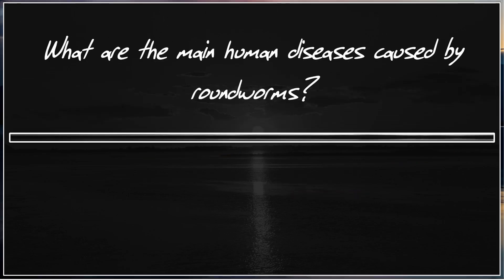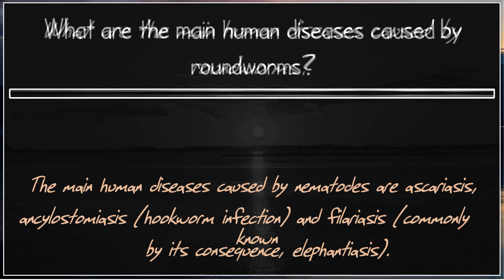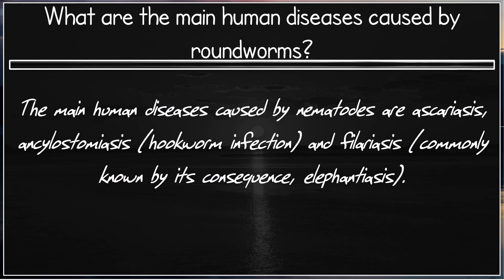What are the main human diseases caused by roundworms? The main human diseases caused by nematodes are Ascariasis, Ancylostomiasis, and Filariasis — commonly known by its consequence, elephantiasis.